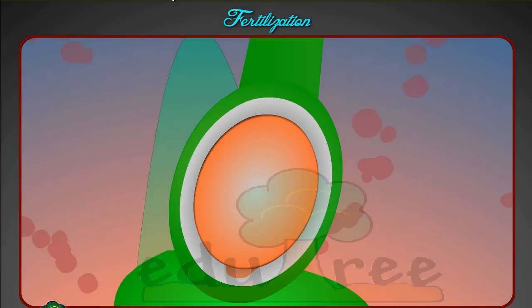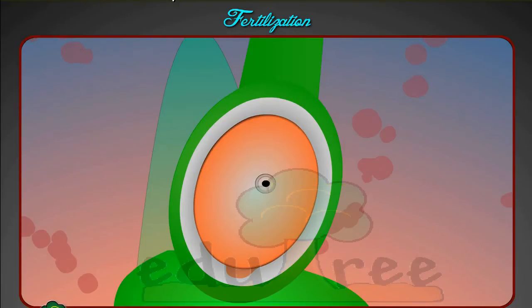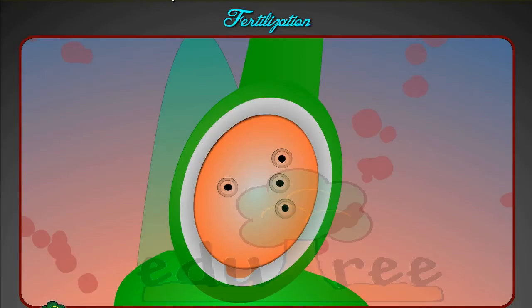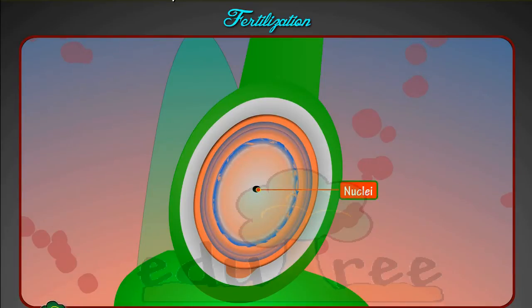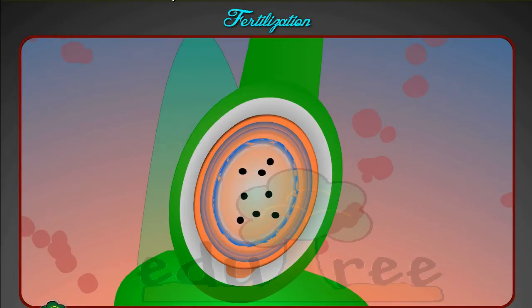At present, the ovule contains one reproductive cell known as the megaspore mother cell. This cell is diploid and undergoes meiosis, producing four haploid megaspores. In the majority of species, three of these megaspores degenerate, leaving only one surviving megaspore. The surviving megaspore expands and undergoes three rounds of mitosis to produce eight haploid nuclei.